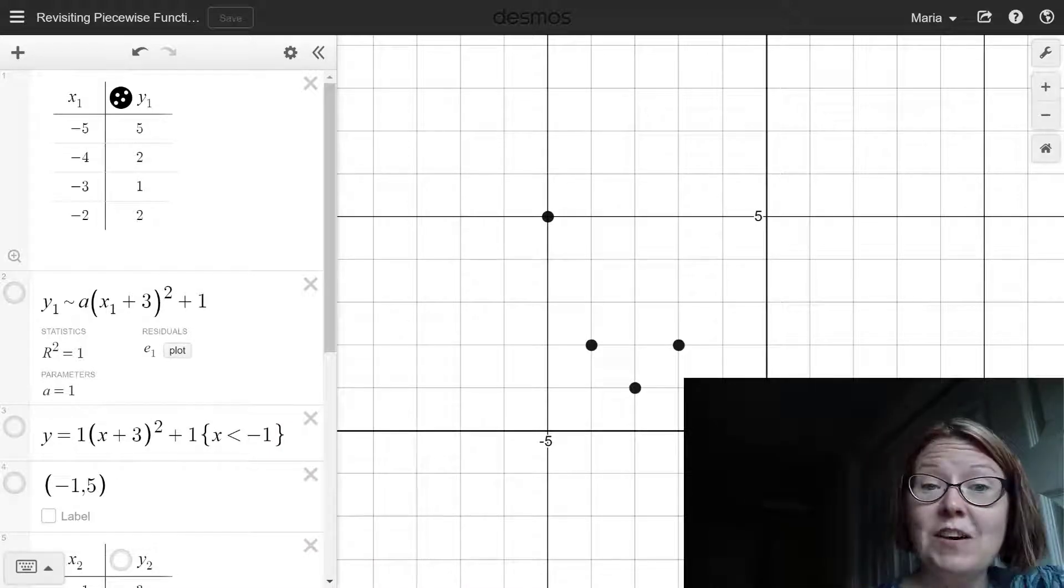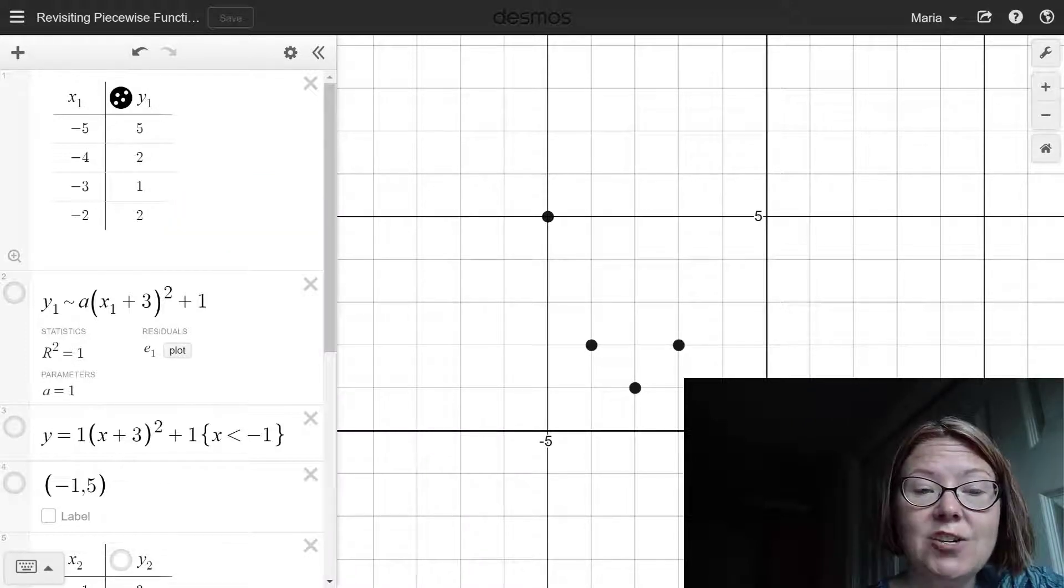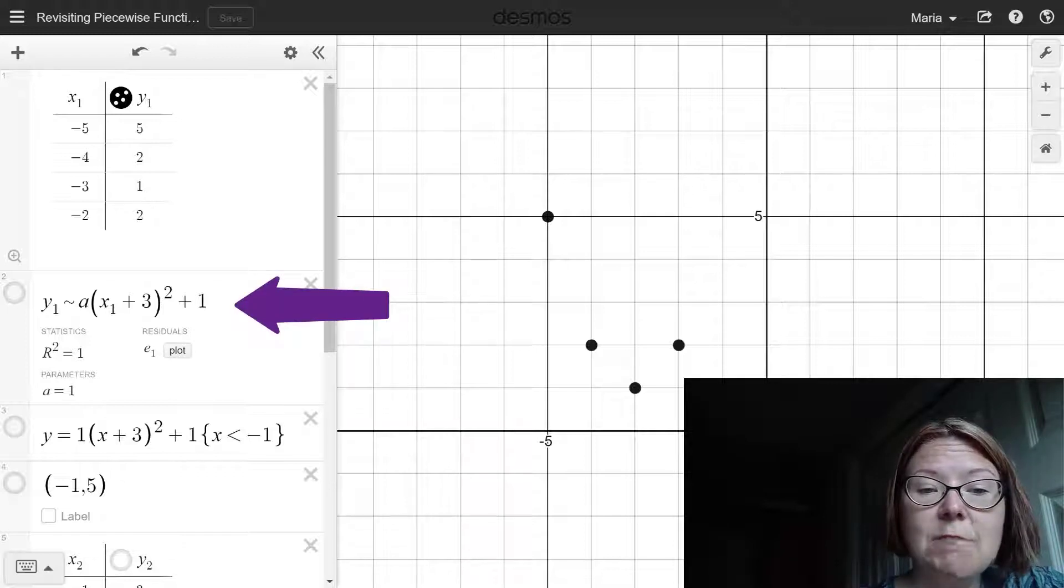For Q1, the first quadratic, I have an xy table, and in that, in pairs, I have (-5, 5), (-4, 2), (-3, 1), and (-2, 2). I can find a regression for that, and since I know that the vertex is at (-3, 1), I can make that regression model to be forced through that vertex.